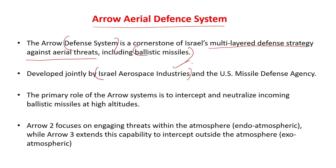The Aero system has been jointly developed by Israel Aerospace Industries and the US Missile Defense Agency. The primary role of the Aero system is basically to intercept and neutralize incoming missiles — ballistic missiles — mostly those which are at higher altitude.